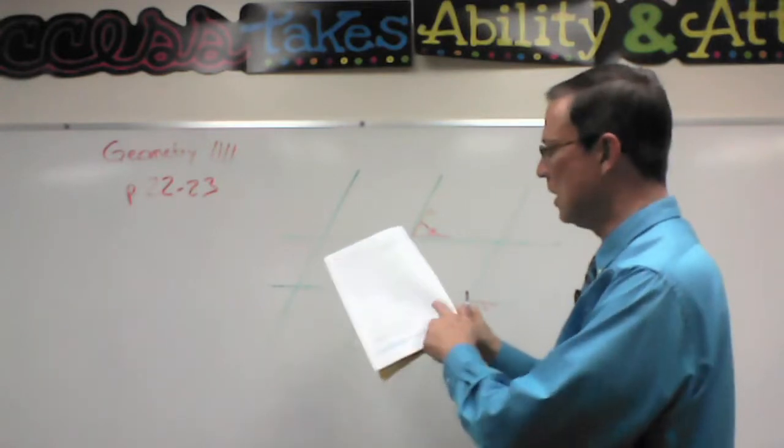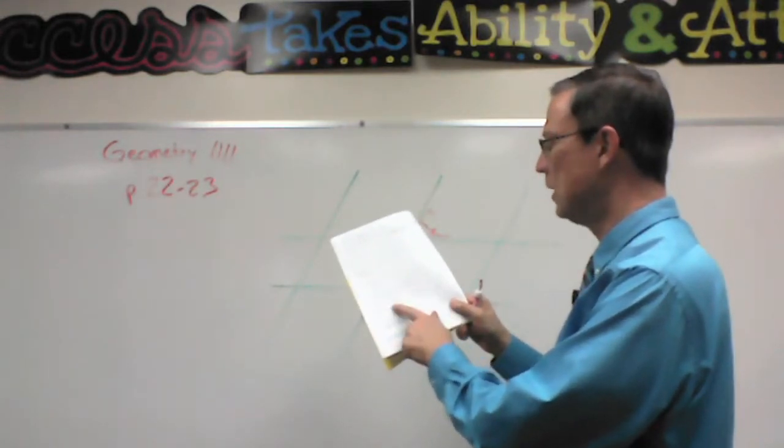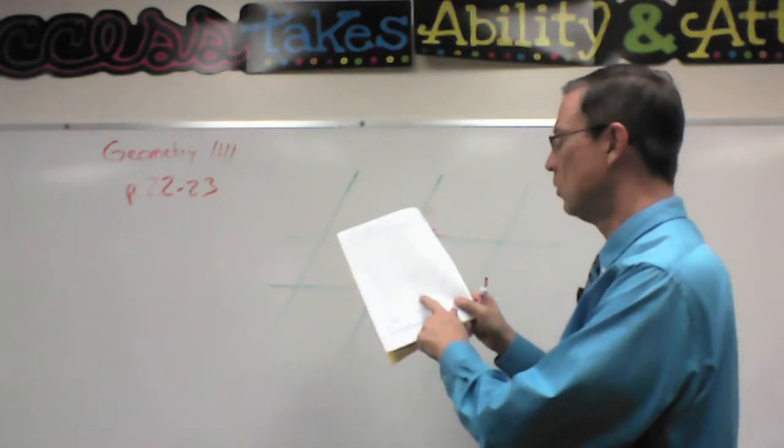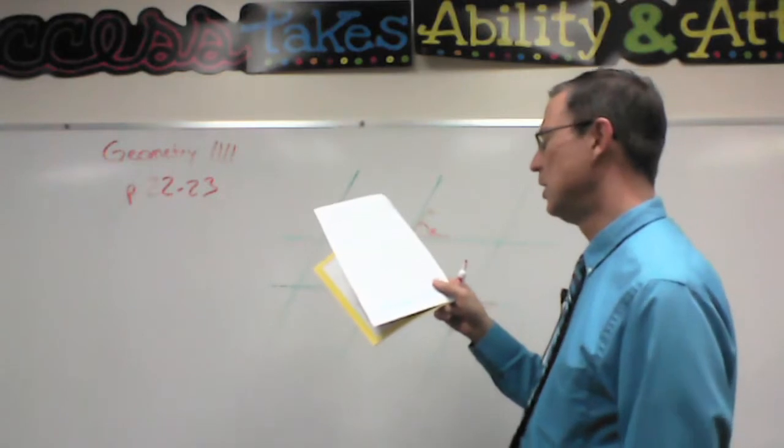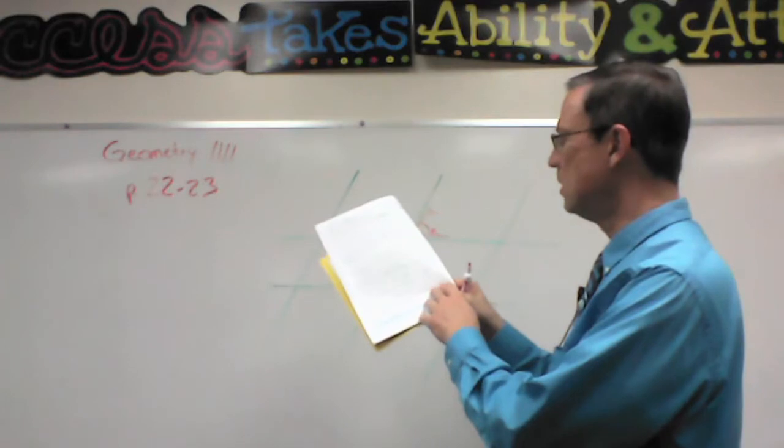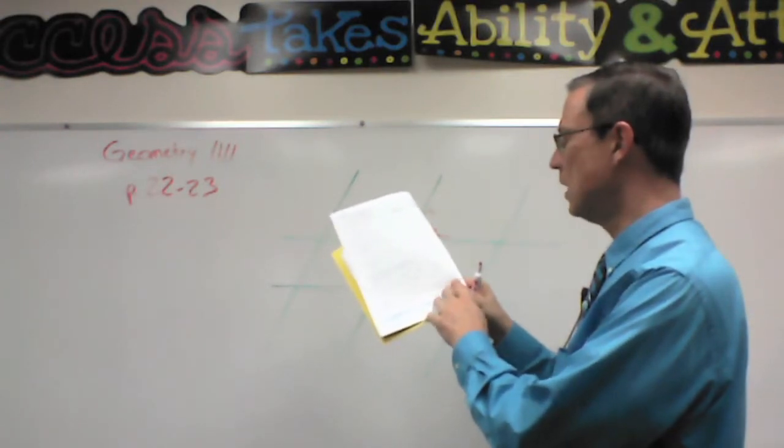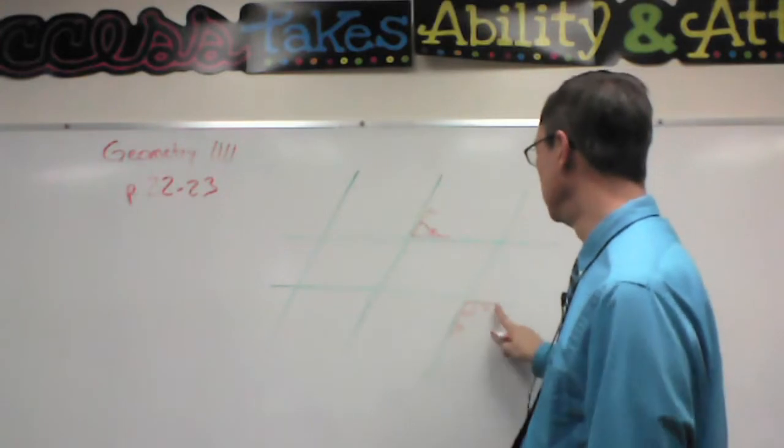If you look at page 23, they have you list several pairs of alternate interior angles, alternate exterior, corresponding angles, vertical angles. And then the challenge: list two angles that are congruent because angles with sides parallel, right side to right side and left side to left side, are congruent.